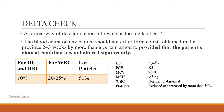Delta check is a formal way of detecting aberrant results. Blood count on any patient should not differ from counts obtained in the previous 2-3 weeks by more than a certain amount, provided the patient's clinical condition has not altered significantly. For example, if hemoglobin was 10 two weeks ago, it should not go beyond 13-14 without medication. The acceptable range for HB and RBC is 10%, for WBC is 20-25%, and for platelets is 50%.